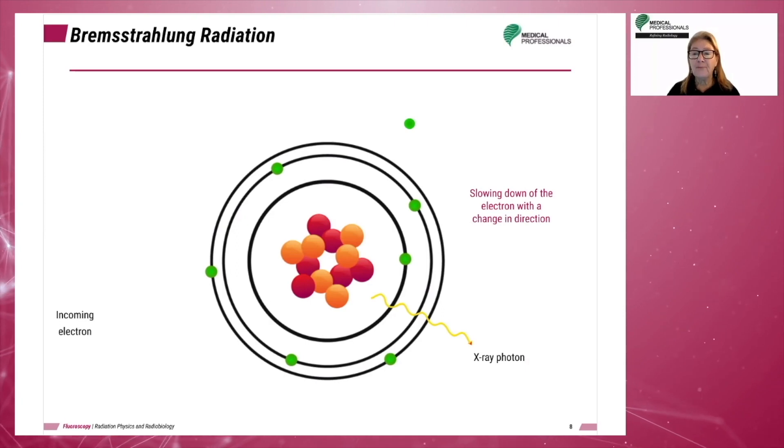Please note, brems radiation makes up the majority of the X-ray beam. As a matter of fact, at kVp levels below 69 kVp, the beam is 100% bremsstrahlung. Also, keep in mind a lot of heat is created. At the target, 99% of what is created is heat.